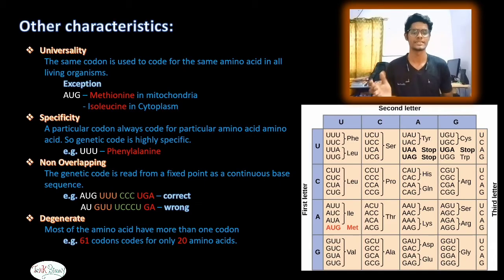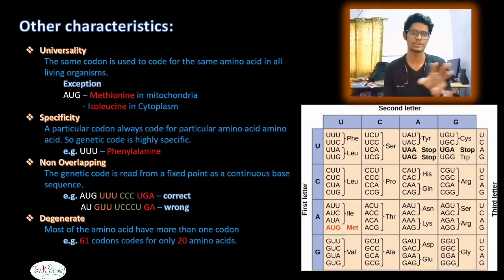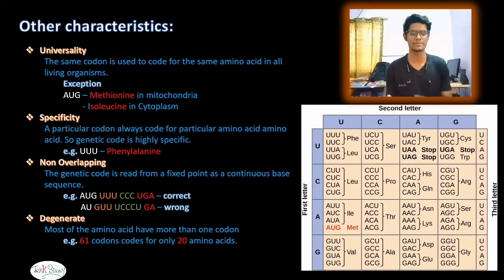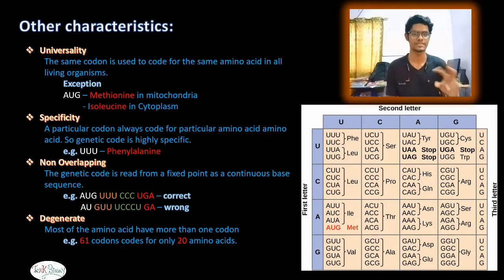The third characteristic is that genetic code is non-overlapping. The genetic code is read from a fixed point as a continuous base sequence in groups of 3. For example, in the sequence AUGUU CCUGA, starting from the fixed point we read AUG, UUC, CUG — each codon is read sequentially without overlap.